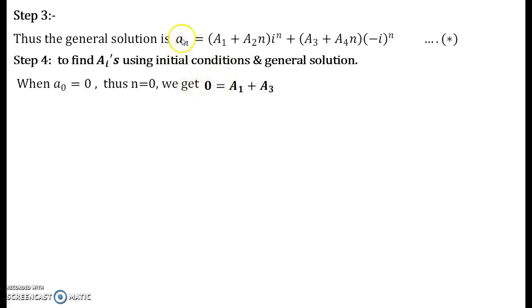What happens is that you get the following equation: 0 = A_1 + A_3. How do you get it? When you write n = 0 over here you get a_0. That a_0 is nothing but equal to 0. When you put n = 0, A_2 × 0 will give you 0. i^0 is 1. Similarly, (-i)^0 is also going to be 1, and A_4 × 0 you will get 0. So finally you are left with A_1 and A_3 added over there equal to 0.